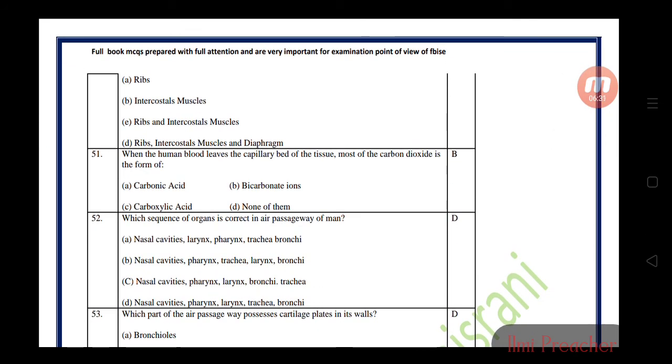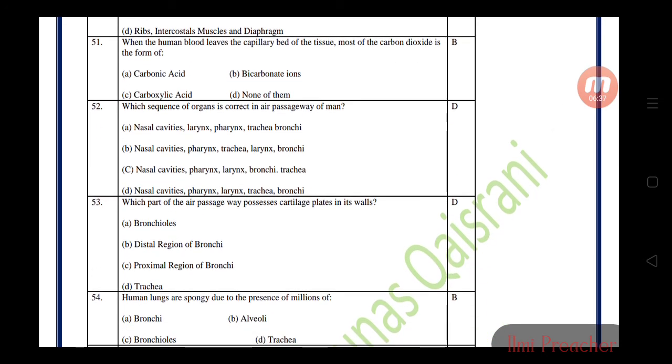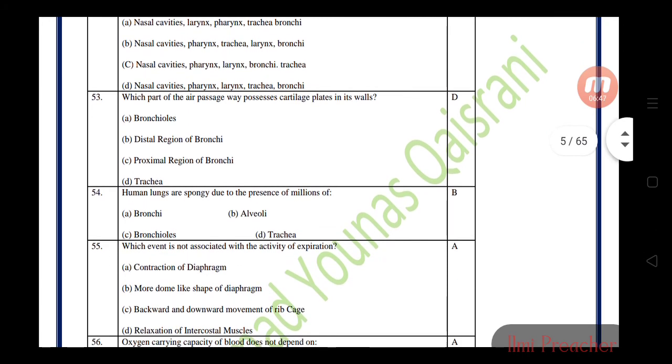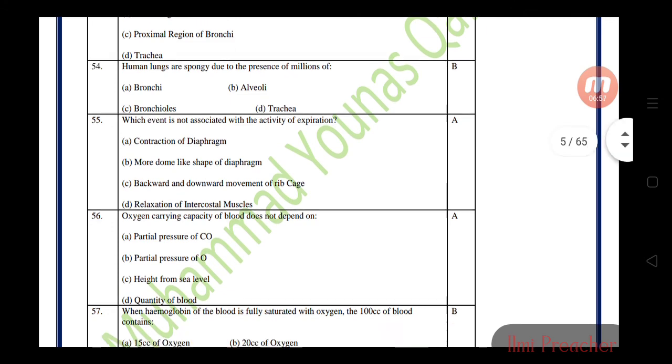The chest cavity walls are composed of ribs and intercostal muscles. When human blood leaves the capillary bed of tissue, most carbon dioxide is in the form of bicarbonate. The correct sequence of organs in the air passageway is: nasal cavities, pharynx, larynx, trachea, and bronchi. The trachea has cartilage present in its wall. Human lungs are spongy due to presence of alveoli. Contraction of diaphragm is not associated with expiration; relaxation occurs during expiration.